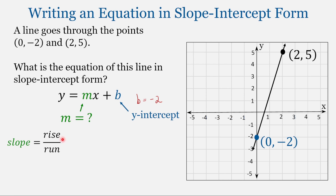Slope is the rise over the run. From the graph, we can count the rise, starting at the left-most point: 1, 2, 3, 4, 5, 6, 7. So we rose 7 from one point to the next. And then we count the run: 1, 2 — and we have a run of 2. This gives us a slope equal to 7/2.